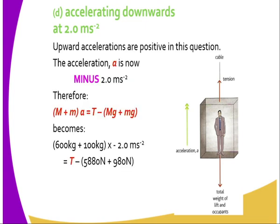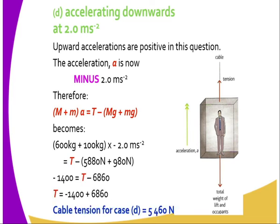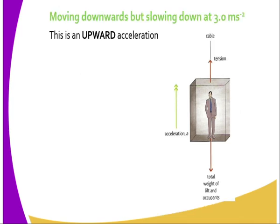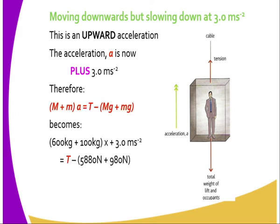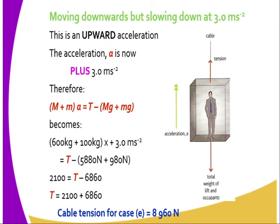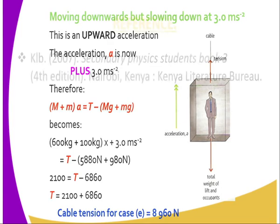When it is accelerating downwards, gravity is taken as positive and therefore the tension on the cable becomes 5460 Newtons. When it moves upwards with positive acceleration, the tension on the cable becomes 8960 Newtons.